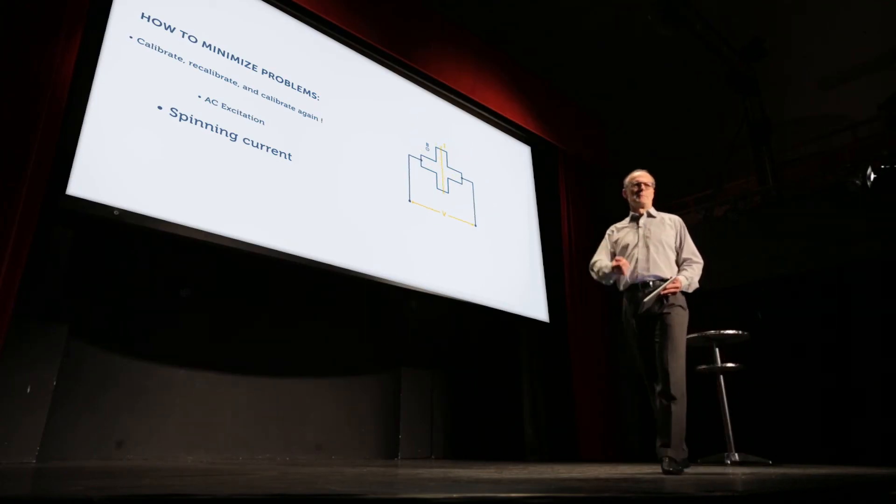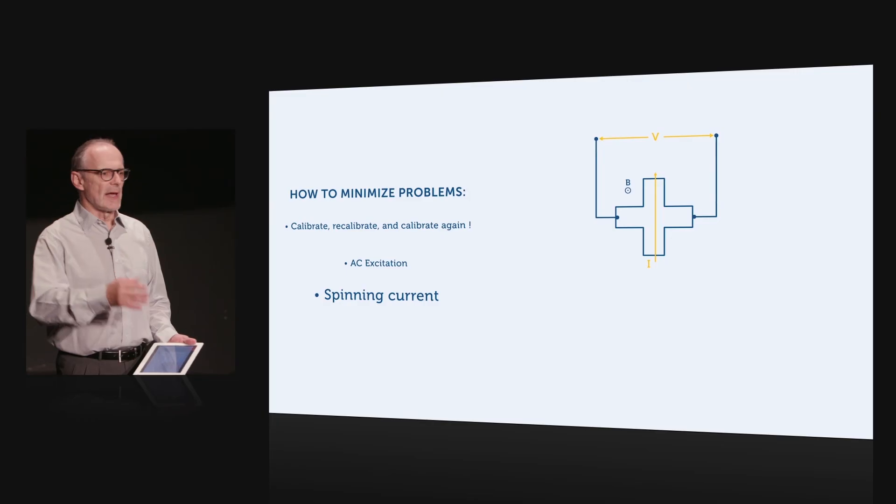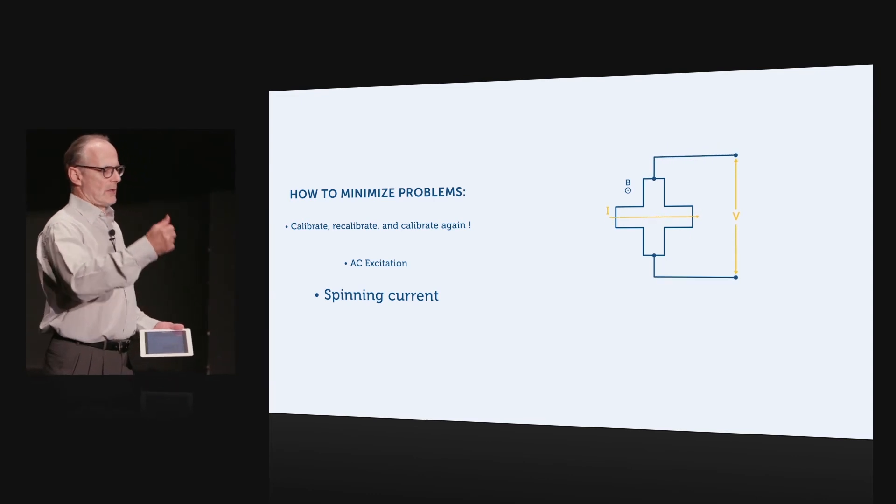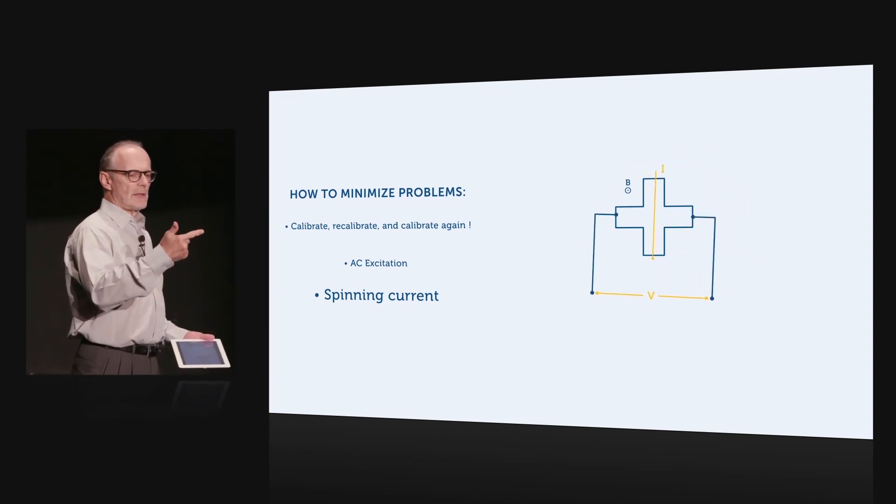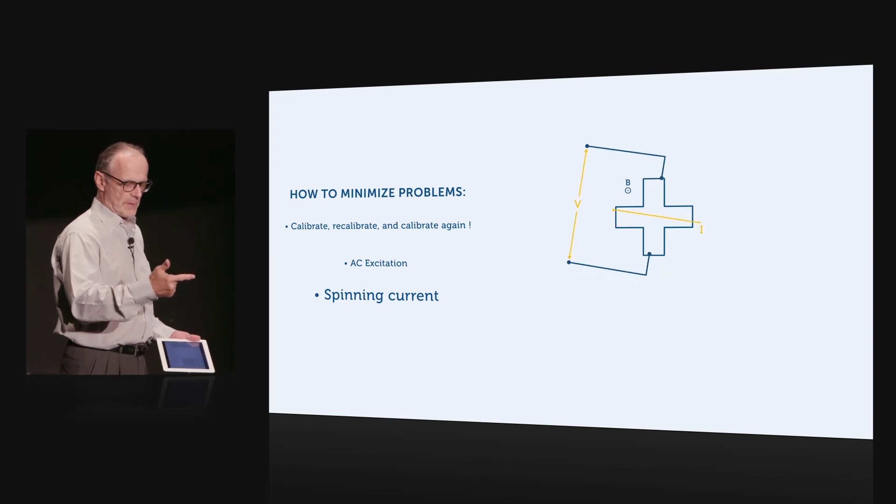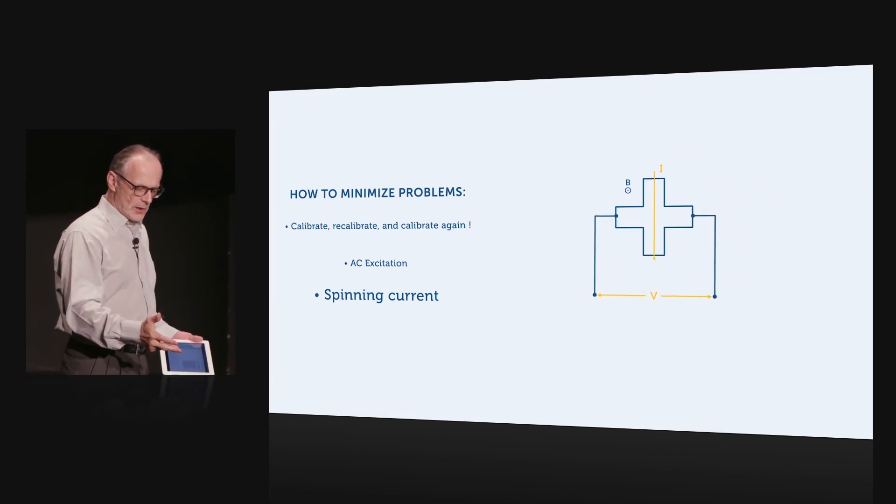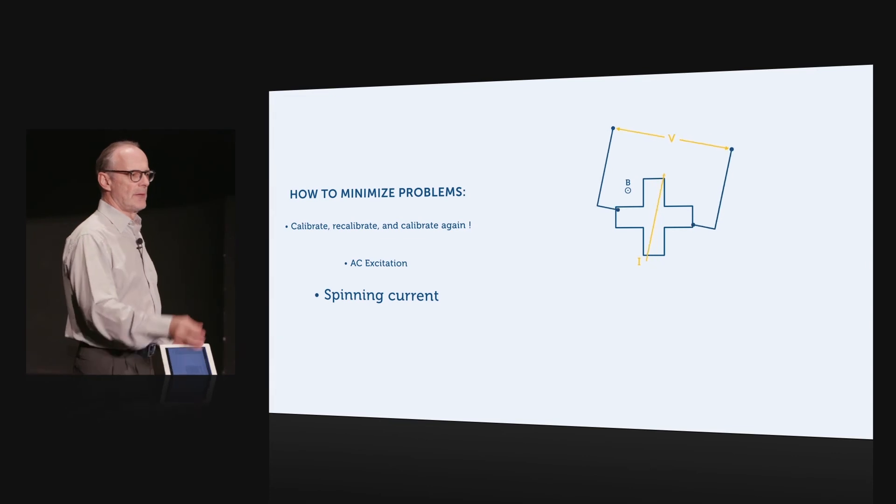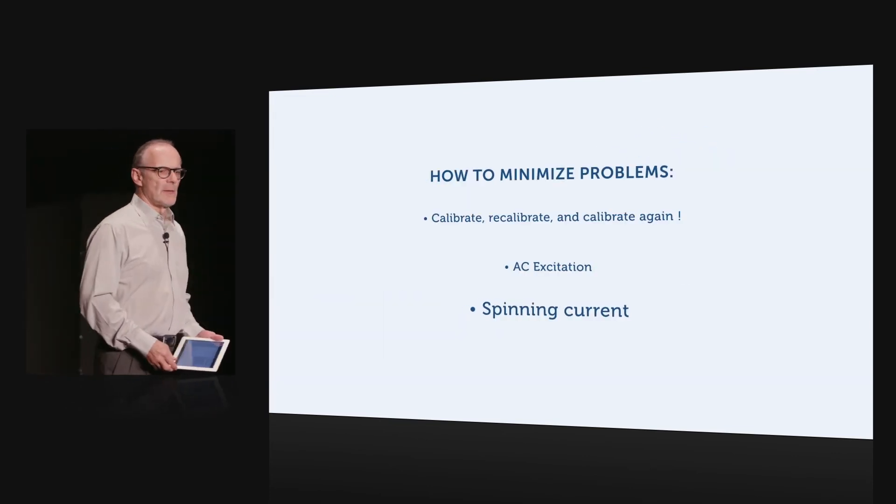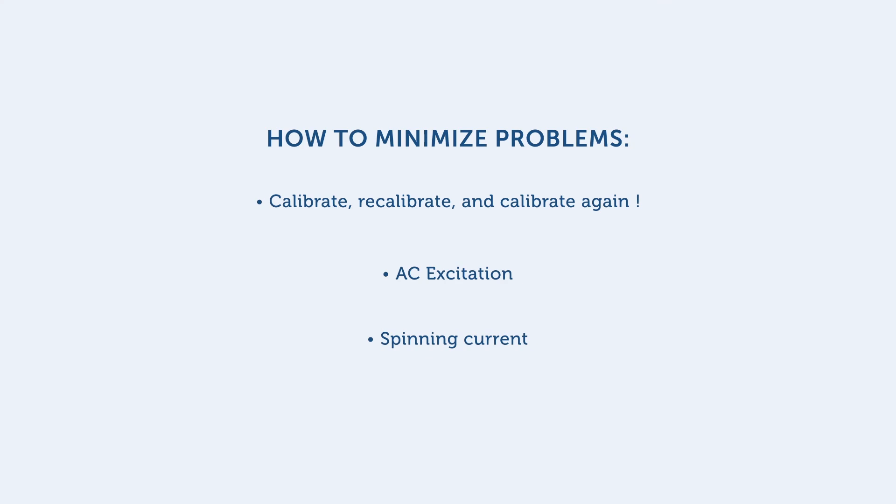So, it really comes into its own, more recently, with the integrated sensors that allow you to put all the Hall sensors themselves, the current source, the amplifiers, the spinning current switches, all that on a single chip. And here we can actually pull the full benefit from the spinning current technique.